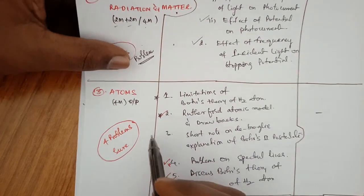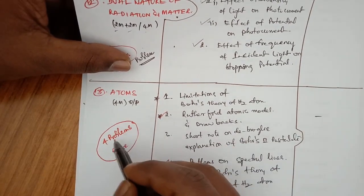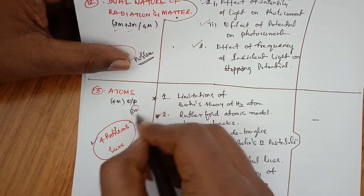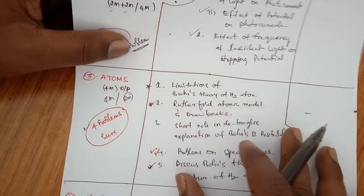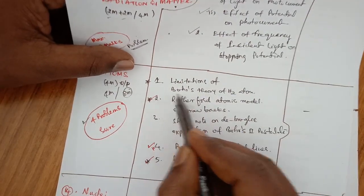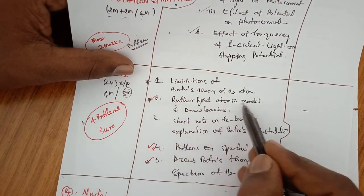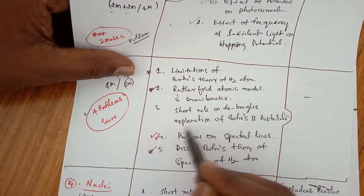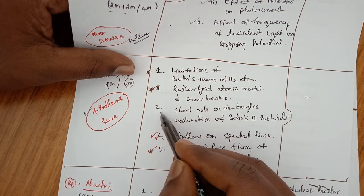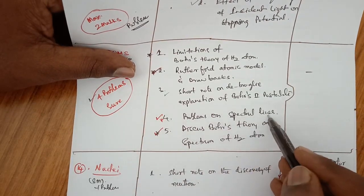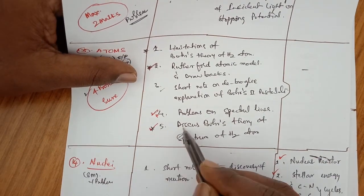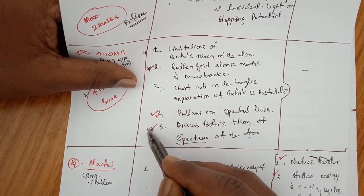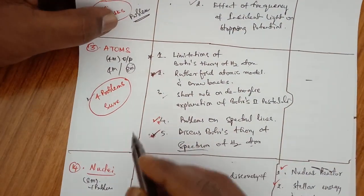Chapter 13 is Atoms — very, very important for 4 marks problems and 4 marks questions. Sometimes 8 marks weightage and sometimes 4 marks weightage — both problem type and question type. First question: limitations of Bohr's theory of hydrogen atom. Second question: Rutherford atomic model and its drawbacks. Third question: write a short note on De Broglie's explanation of Bohr's second postulate — very, very important. Fourth question: problems on spectral lines — very important. Fifth question: discuss Bohr's theory of the spectrum of the hydrogen atom — also very, very important. Don't miss it.